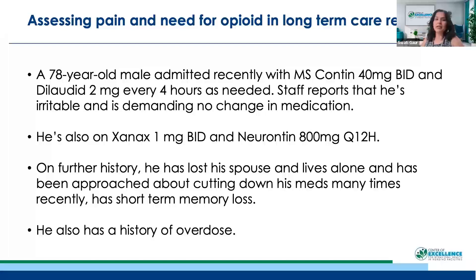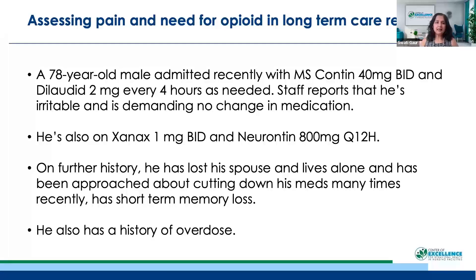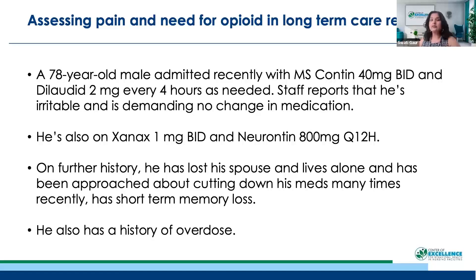The problems here: he's on MS-Contin and Dilaudid — polypharmacy with opioids, and we don't know what each is doing. He's on Xanax, which is a really terrible combination with opioids. He's also on a giant dose of Neurontin. The first thing you need to do with that dose of Neurontin is check kidney function and GFR, because patients may not be able to handle it — and that is what we found.